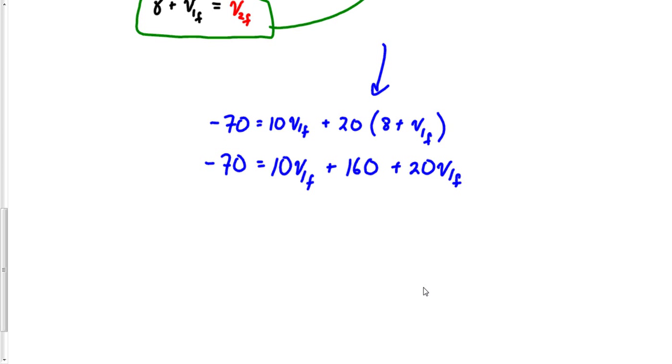We need to get everything moving correctly here. Let's subtract 160 from each side. So this would be negative 230 equals 10 and 20 makes 30 v1 final.